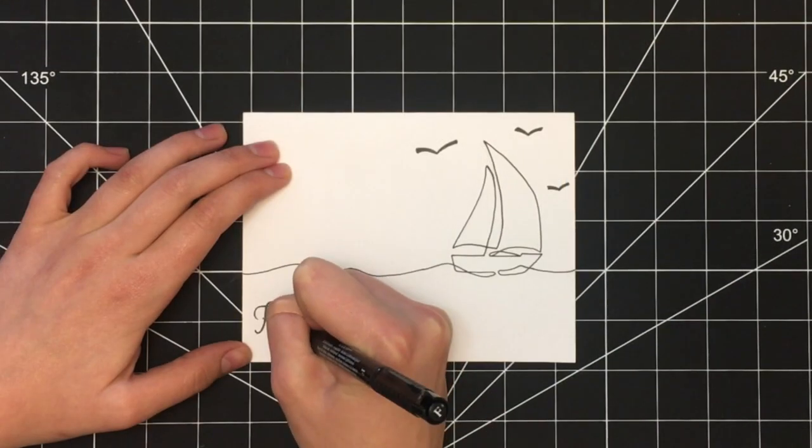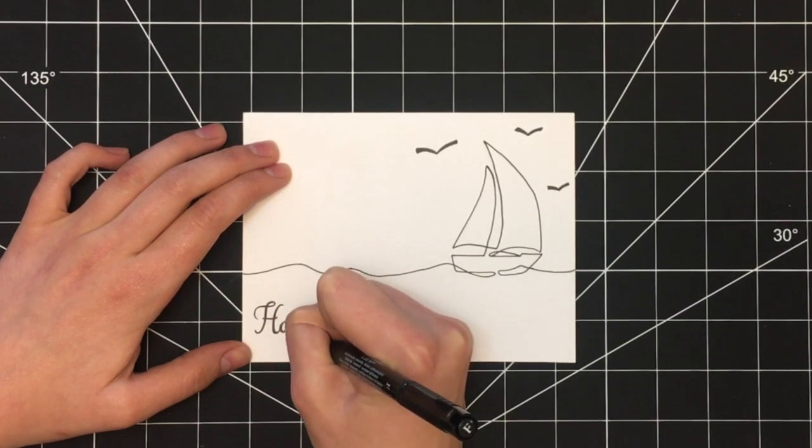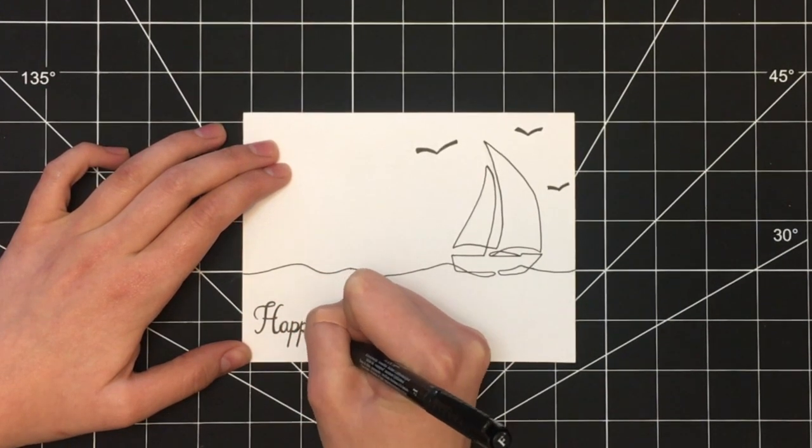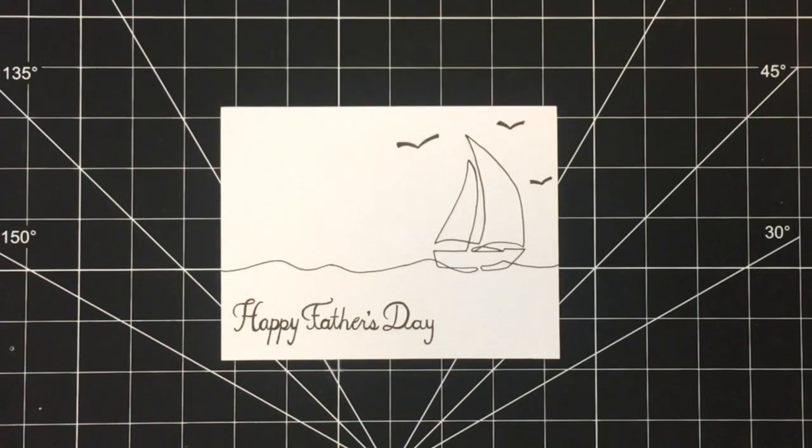Then I used the same pen to give the text a bit of a calligraphy or script look and I thickened the downstroke of each letter. So you could theoretically leave the card like this if you wanted something really plain and simple.